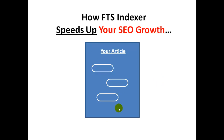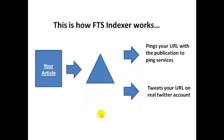That was what you had to do before FTS Indexer was invented and added into the members area of Free Traffic System version 2. With FTS Indexer the story about your article publication is different, because once an article or any other unit of content gets published on a website, FTS Indexer — which is marked here with a triangle — from your computer pings the URL with your publication to a big list of ping services, and also tweets the URL with your article publication on your real Twitter account automatically.